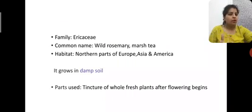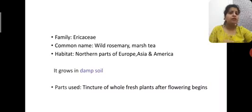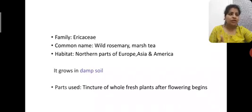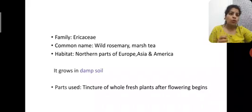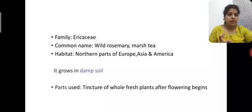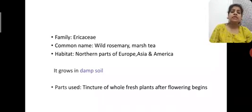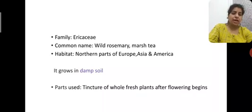About the family — it belongs to the Ericaceae family with the common name wild rosemary, marsh tea, and also Labrador tea. With these common names, we can see there is a relationship to tea and marshy environments, which is also a characteristic of this plant.